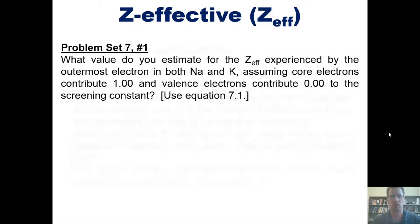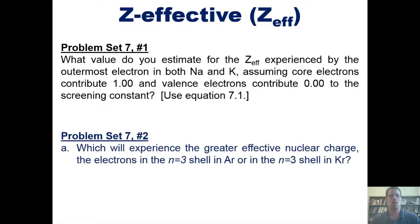That takes us to a set of problems from our problem set. What value do you estimate for the Z-effective experienced by the outermost electron in both sodium and potassium, assuming core electrons contribute 1 and valence electrons contribute 0 to the screening constant? And which will experience a greater effective nuclear charge, the electrons in the n equals 3 shell in argon, or in the n equals 3 shell in krypton? Now, although I'm not going to answer either of these questions in this video, I will post a link here to a separate video in which I do. I'd highly recommend, though, that before you watch it, you should attempt to do these on your own.